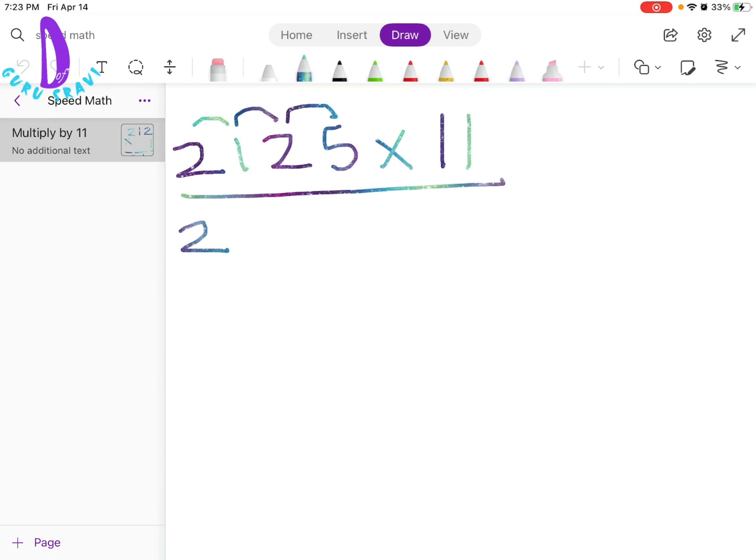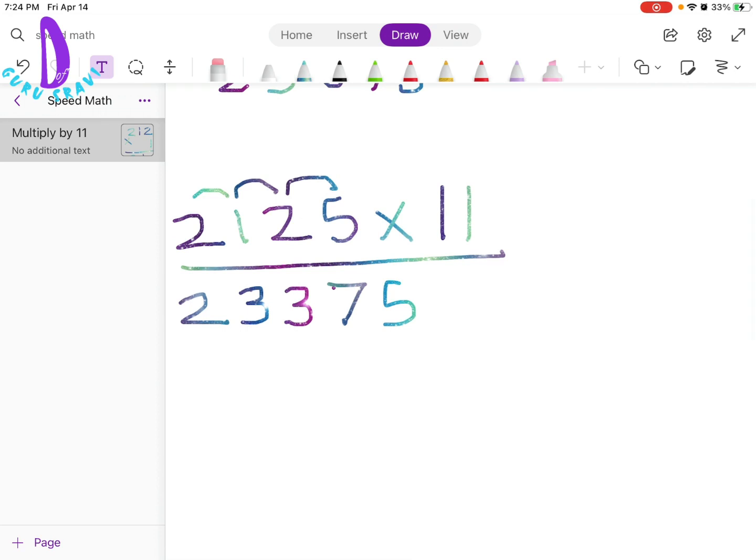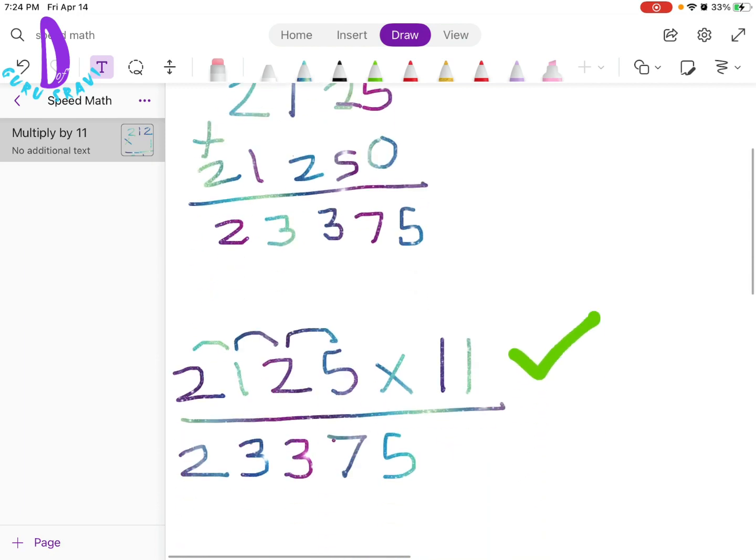First we're going to pull down the 2 and now we're going to do 2 plus 1. 2 plus 1 is 3. Now, we're going to do 1 plus 2. 1 plus 2 is also 3. And now, 2 plus 5. 2 plus 5 is 7. And now, we're just going to pull down the 5. So that's the answer and we got the same thing. This method took a shorter amount of time rather than this method where we had to multiply, then we had to add and then get the final answer.